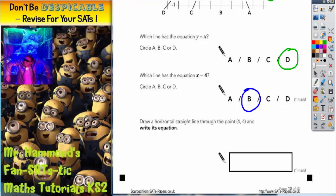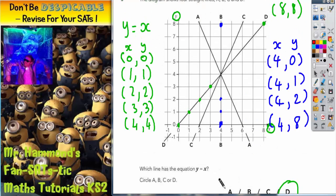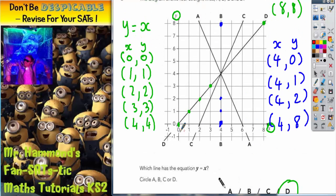The final part of the question says draw a horizontal straight line through the point 4, 4 and write its equation. Well, let's go back to the graph and mark on 4, 4. Well, 4 across 4 up would be there. And it asks us to draw a horizontal line. So a horizontal line is this one.